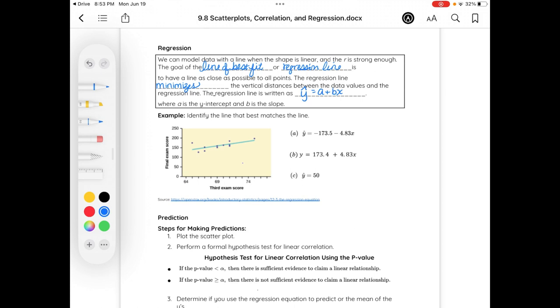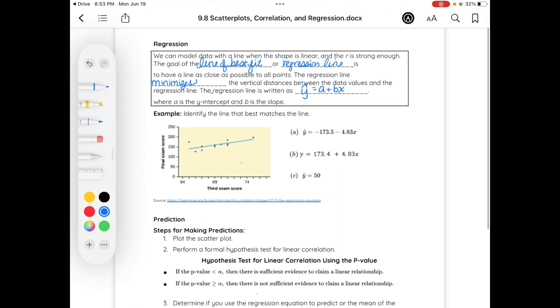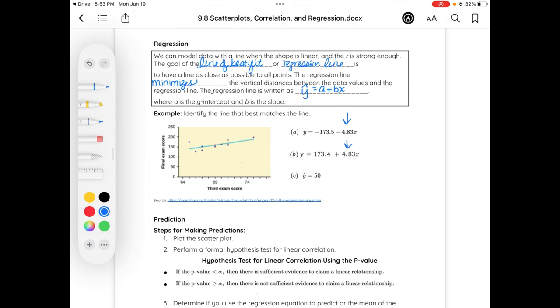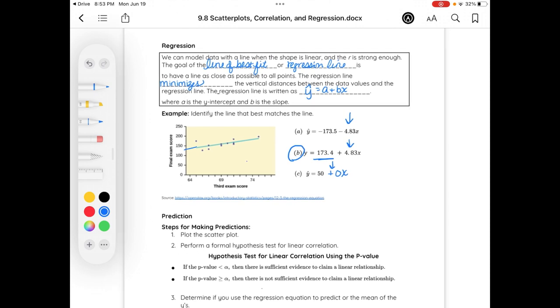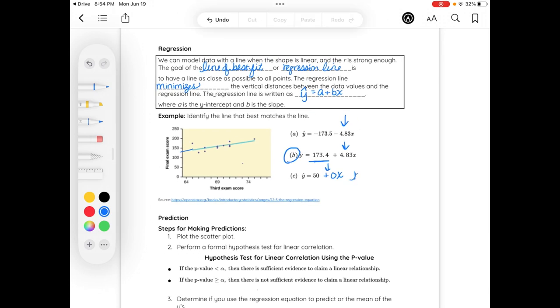Identify the line that best matches the line. When I'm looking at this, I know that I have a positive slope, so when I look at my b values, the only one that is positive, the only one that is positive is part b. Also, I see my y-intercept should slightly go near 173.4, but my best guess based on the slope is that first letter b. y equals 50 is a horizontal line, and negative 4.83 is a negative slope.